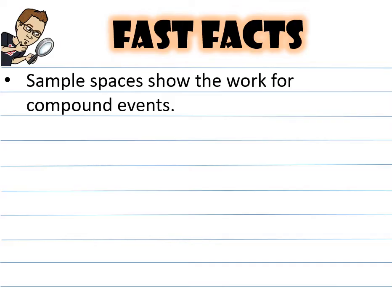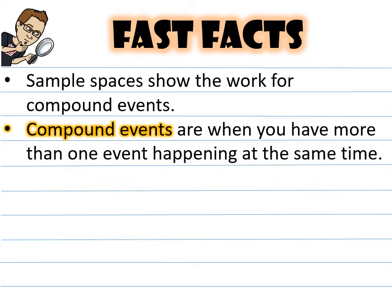Here are some fast facts. Sample spaces show the work for compound events, not simple events. Compound events are when you have more than one event happening at the same time. A simple event is just a one-time deal. Compound events, there's more than one event happening.